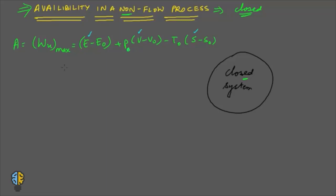Now if you write down the value of E over here, this would become U plus MV square by 2 plus M G into Z minus E naught. This is U naught. Now there is no velocity at dead state, so this will be only plus M G Z naught. And the rest would be same P naught into V minus V naught which indicates the work done on the atmosphere to expand it, minus T naught into S minus S naught.